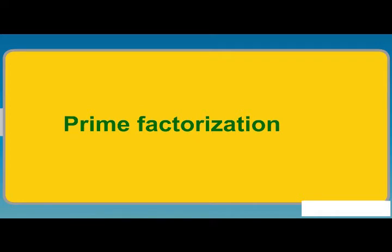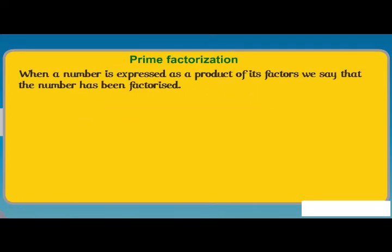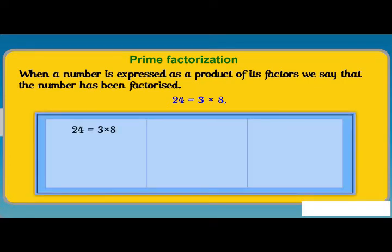Prime factorization. Let us see what is prime factorization. When a number is expressed as a product of its factors, we say that the number has been factorized. Thus, when we write 24 is equal to 3 into 8, we say that 24 has been factorized. This is one of the factorizations of 24. The others are 24 is equal to 2 into 12 and 24 is equal to 4 into 6.